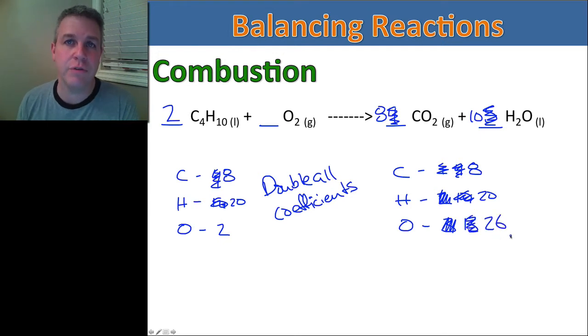Now this is an even number, so I can break this number in half, which makes me write thirteen over here. So now I have thirteen times two gives me a total of twenty-six oxygens over on this side, which balances it over here.